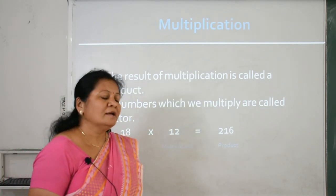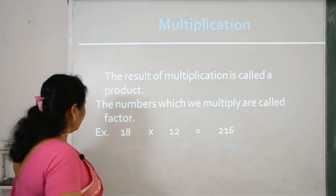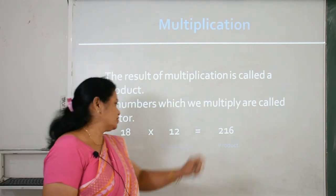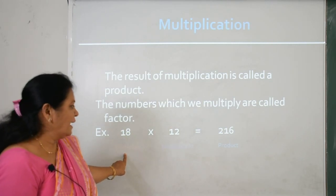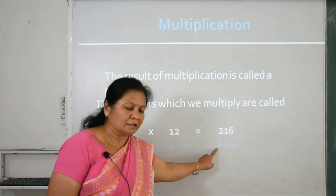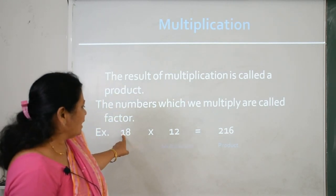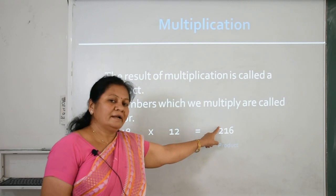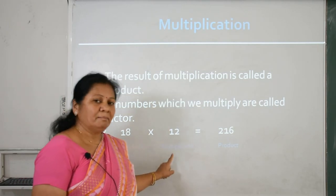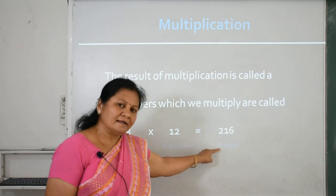The result of multiplication is called a product. When you multiply, the result is called the product. Here, 18 multiplied by 12 is equal to 216. So 18 is the multiplier, 12 is the multiplicand, and 216 is the product. Multiplicand's other name is factor. Product means the answer or result.